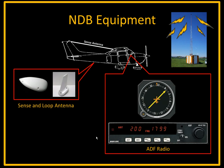Some more modern aircraft will not have a separate sense antenna. Instead, they'll have a sense loop antenna that's integrated together, which looks like the unit shown here on the left. We need to turn that signal into something useful for the pilot, so we have the ADF, or Automatic Direction Finder, located on the instrument panel. We also need to be able to tune to a particular station using the ADF radio, where we can see the channel and the associated frequency in kilohertz.